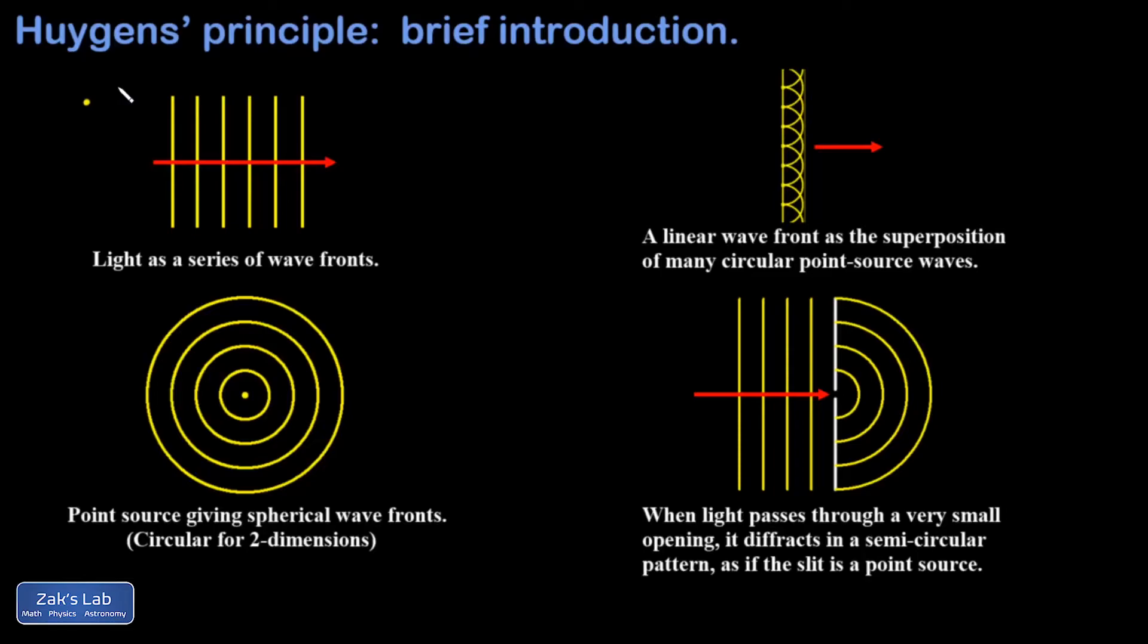Huygens' Principle says that the propagation of a wave can always be described as a superposition of point sources, each producing a spherical wave front or, in two dimensions, a circular wave front.